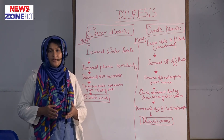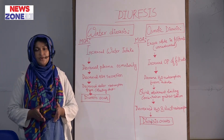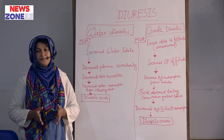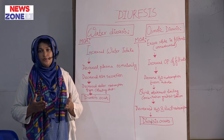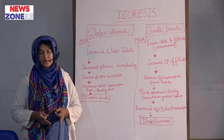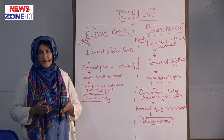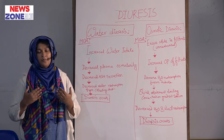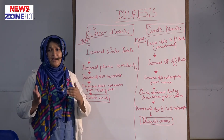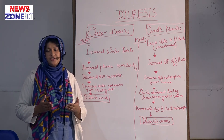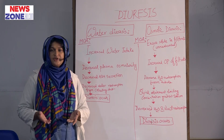In water diuresis, water reabsorption from the proximal convoluted tubule will be normal, but in osmotic diuresis it will be decreased. Water reabsorption from the distal convoluted tubule is decreased in both diureses. Poor medullary interstitial hyperosmolarity occurs due to decreased urea deposition in water diuresis, and due to decreased sodium chloride deposition in osmotic diuresis. In water diuresis, urine formation may reach up to 23 liters per day, but in osmotic diuresis it may exceed more than 23 liters per day. ADH concentration is decreased in water diuresis but normal in osmotic diuresis.